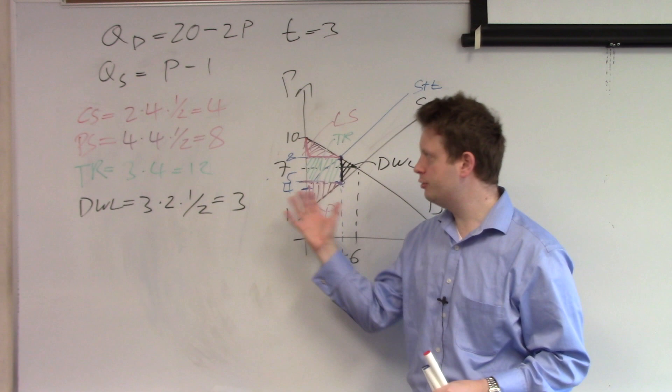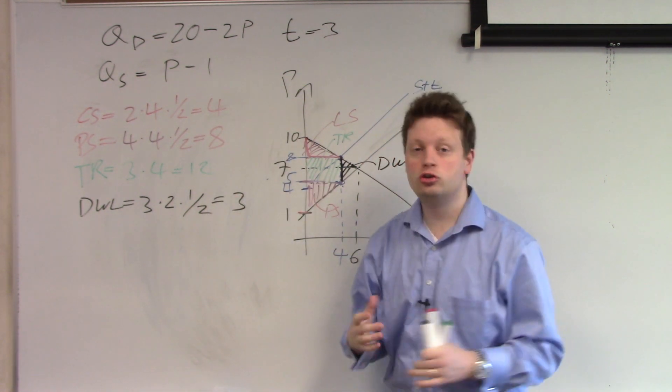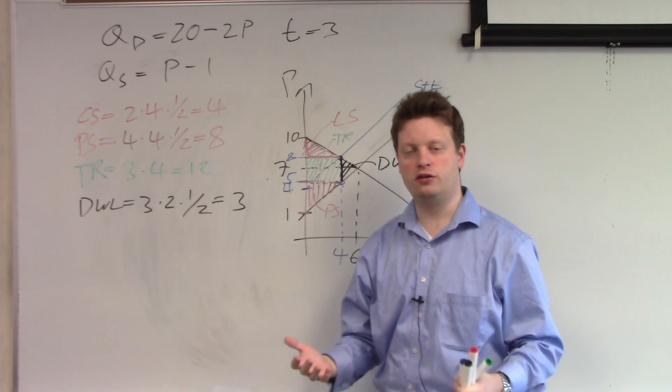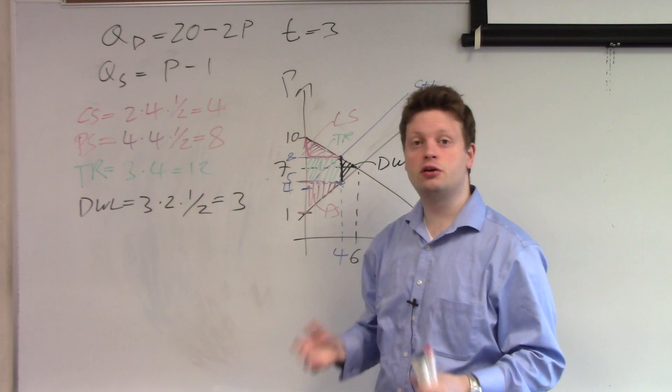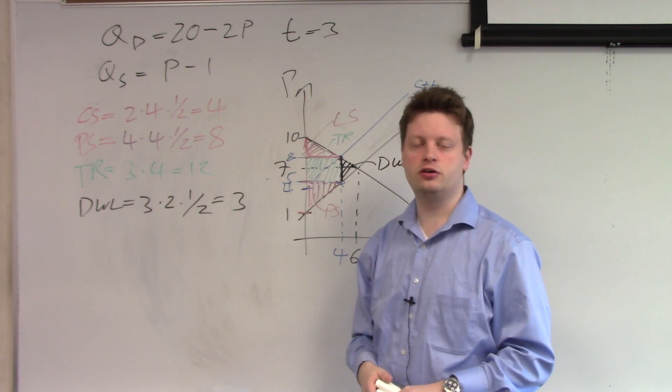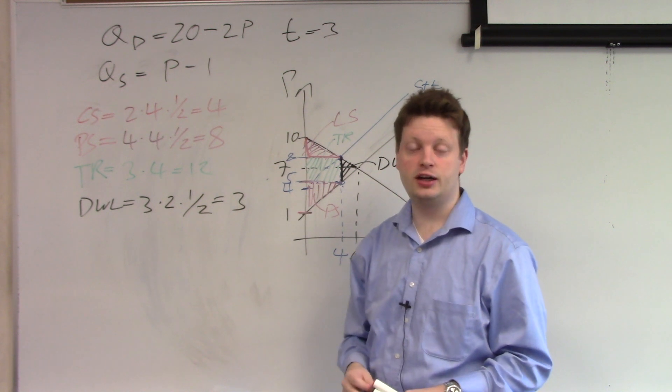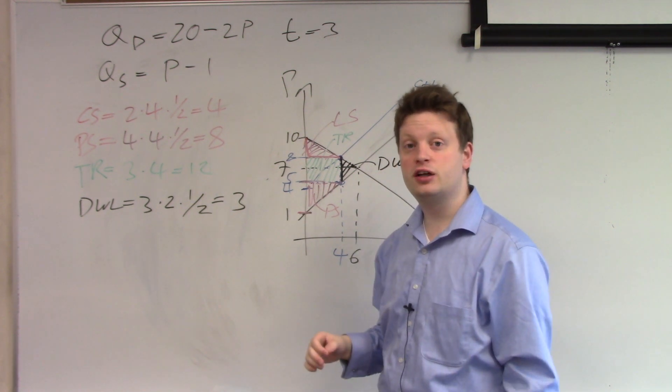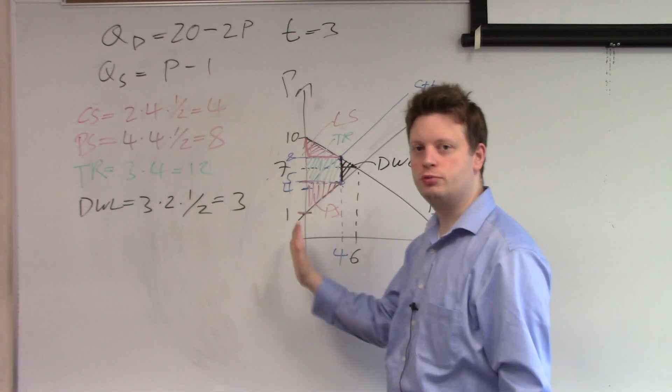Now that we calculated total welfare with the tax, we can look at who has the main burden of this tax. Who is the main payer of this tax? There are several ways to calculate who gets the burden of this tax. The way I'll do it here requires that you have a linear demand and linear supply. Specifically, the approach I will take here is I will look at the slope of demand and the slope of supply.